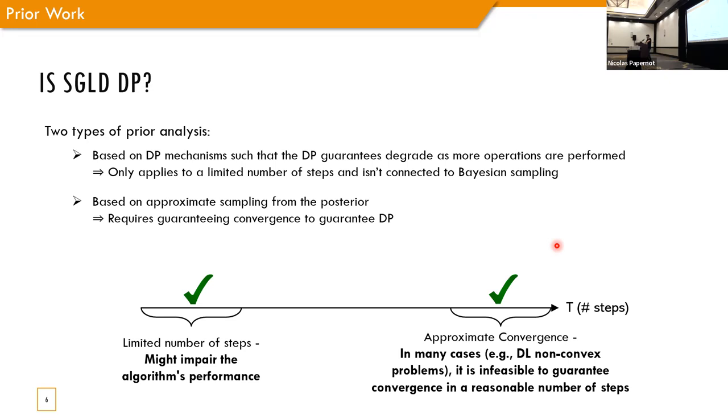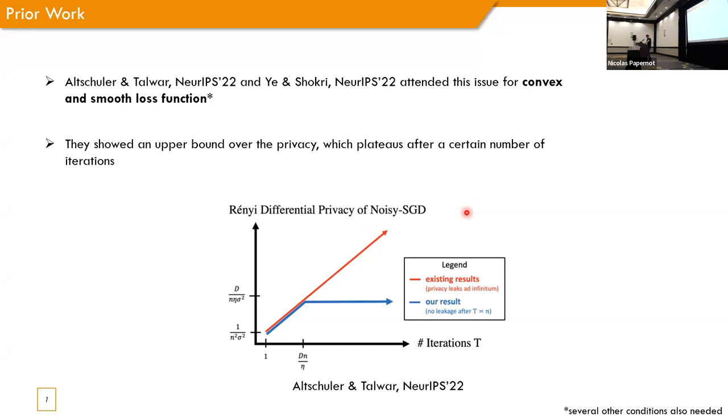The second one is based on approximate sampling from the posterior distribution. Now, to use that analysis to guarantee privacy, you also have to guarantee approximate convergence to the posterior, which can be hard for some cases, for example, for non-convex problems, which many deep learning problems are non-convex. So, we see that there is no really effective privacy analysis for this interim region. And moreover, this is the main region of interest, because otherwise, we either might impair the algorithm performance, or we will have to guarantee convergence, which is not always feasible.